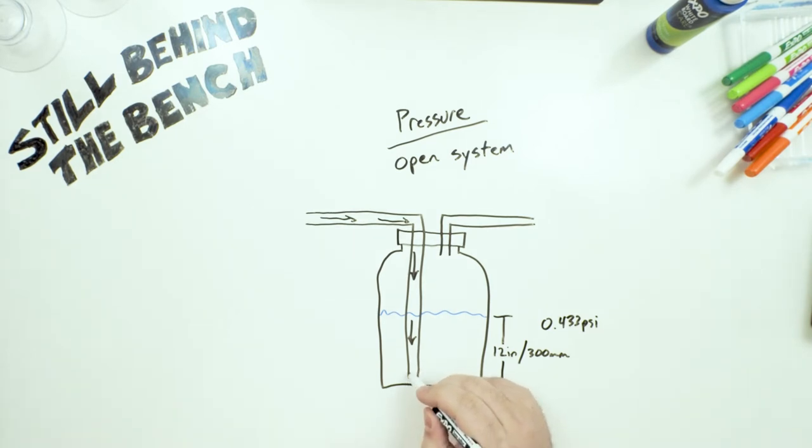I should also mention that this 0.433 psi would only be if the surface area that this cylinder takes up was only one square inch, because it's 0.433 pounds per square inch. So yeah it's not that much.